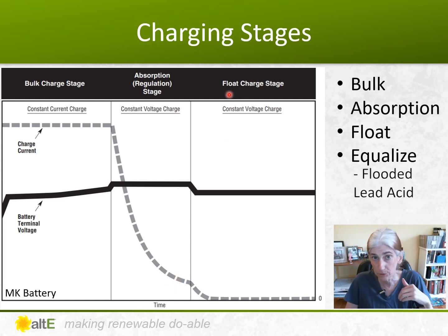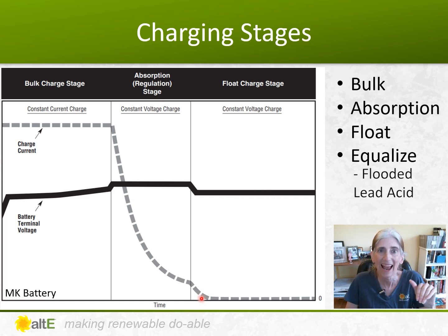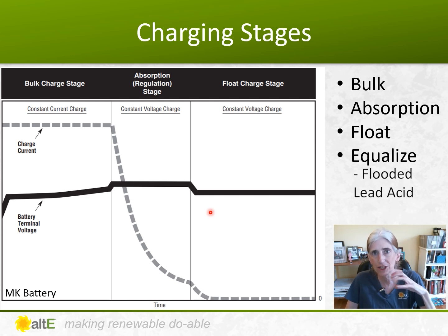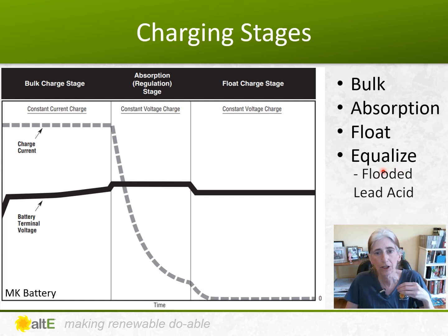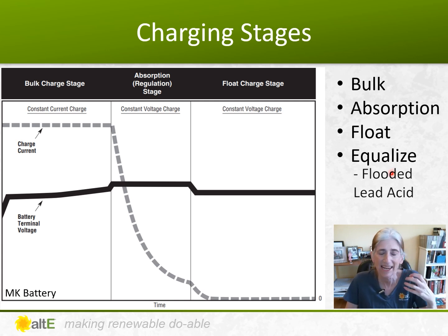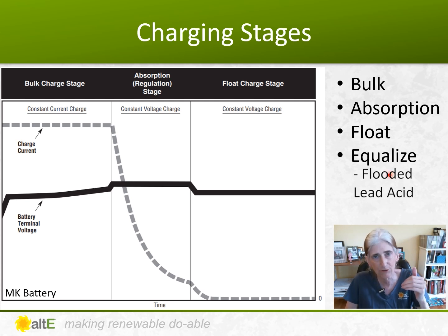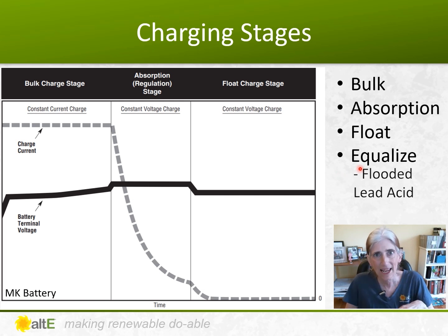The next stage is float. At float, your voltage drops back down to around the full battery voltage, and your current is pretty much down to zero because the battery is full and you're just keeping it topped off. If you have a flooded lead acid battery, you'll also talk about equalizing it — maybe once a month, you throw a really high voltage at it. That shakes off any sulfation that's formed on the plates and makes sure each individual cell is fully charged, getting the whole battery healthy and full. You only do this with flooded lead acid batteries, not with lithium or sealed batteries.